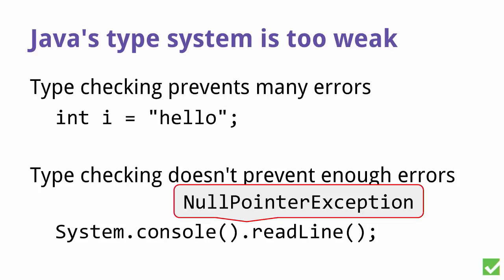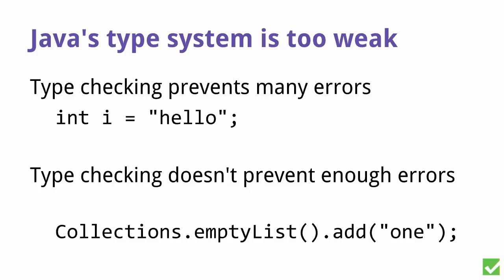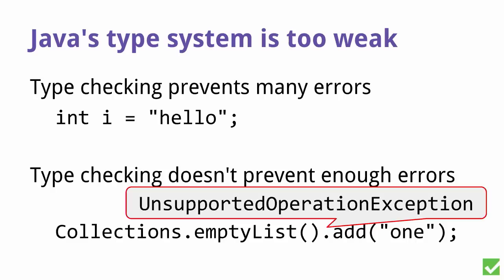System.console can return null — for instance, if you're running on an embedded device or essentially anything that's headless. The type system doesn't tell you this. It lets you compile and run your code fine, but then it fails at runtime. Here's another example that will always fail every time — it will always crash. It gives you an unsupported operation exception because empty list is unmodifiable and it doesn't support add. But the Java compiler doesn't know this, so it lets you write this code, run it, and have it fail at runtime.